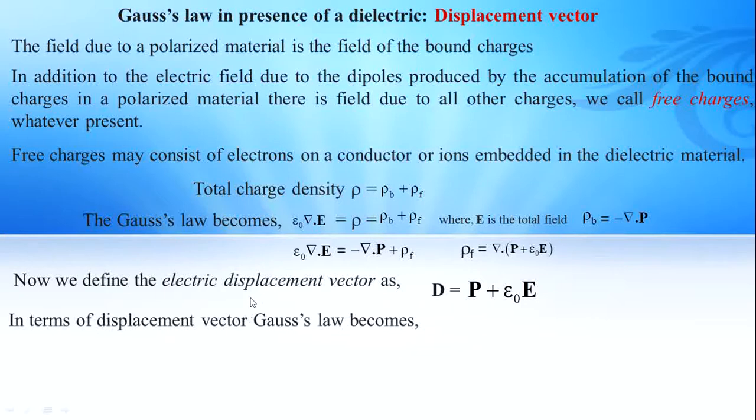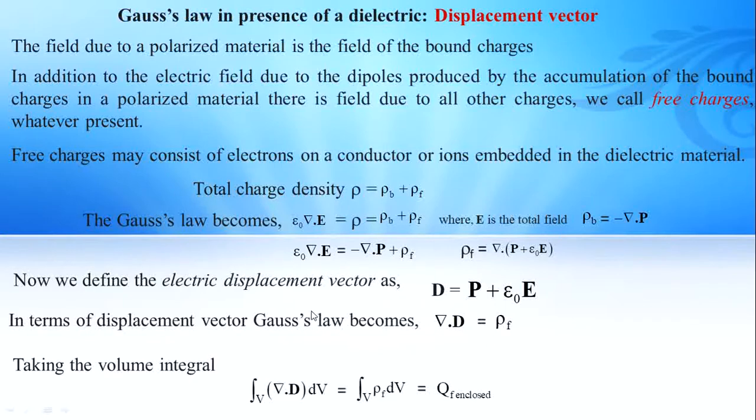In terms of displacement vector, Gauss's law becomes del dot D equals rho_f. Taking the volume integral on both sides, volume integral of del dot D dV equals volume integral of rho_f dV.